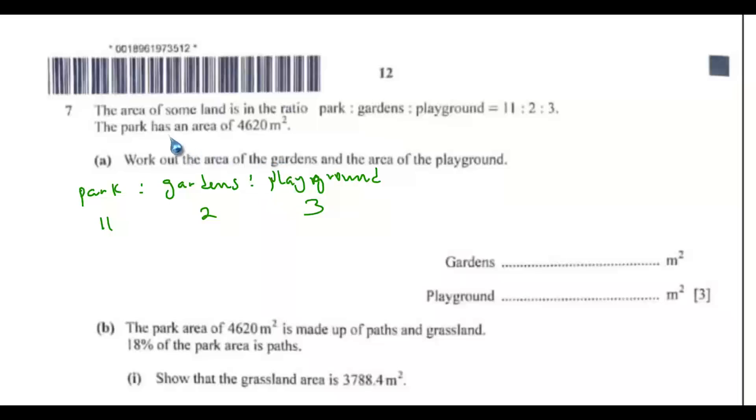The park has an area of 4620. So what we need to do, what was done to 11 to get to become 4620? So to get that, you have to divide 4620 by 11 and you get 420. So that means 11 was multiplied by 420 to get this.